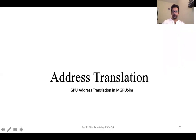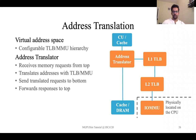In this section we are going to discuss how the address translation hierarchy is modeled in MGPUSim. On the right hand side we show the address translation hierarchy. CUs or caches send their requests to L1 TLBs, which are private to each compute unit. In case of an L1 TLB hit, the response is returned and the physical memory access can continue.